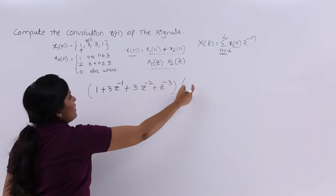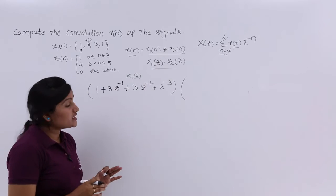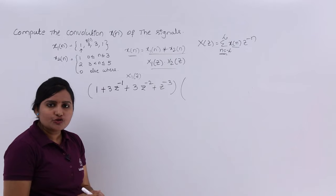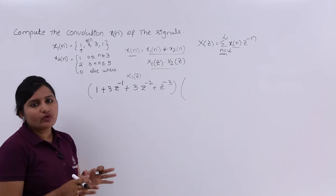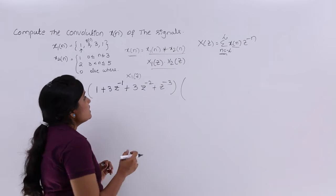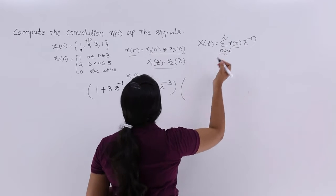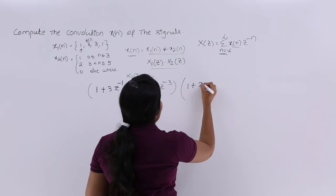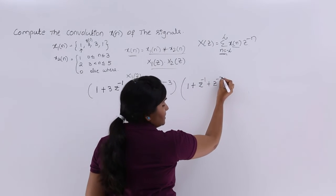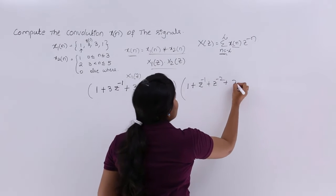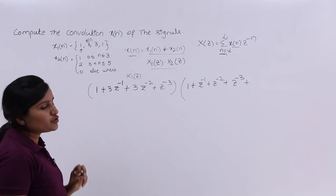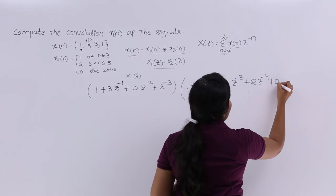Similarly, I am going to write X2(Z). X2(Z) also has limits. It is equivalent to 1 from N=0 to N=3, meaning at 4 instants of time the sample equals 1. Then at N=4 and N=5 it is equivalent to 2. So X2(Z) = 1 + Z^(−1) + Z^(−2) + Z^(−3) + 2Z^(−4) + 2Z^(−5).